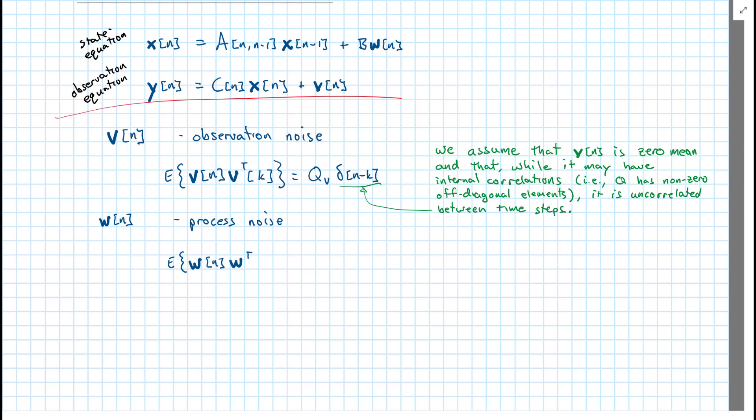So how do we take care of that? Well, it turns out that we can generate non-white noise by taking white noise and putting it through some LTI system, some filter. If we do that, then what we end up doing is we have a white noise excitation, W or V.